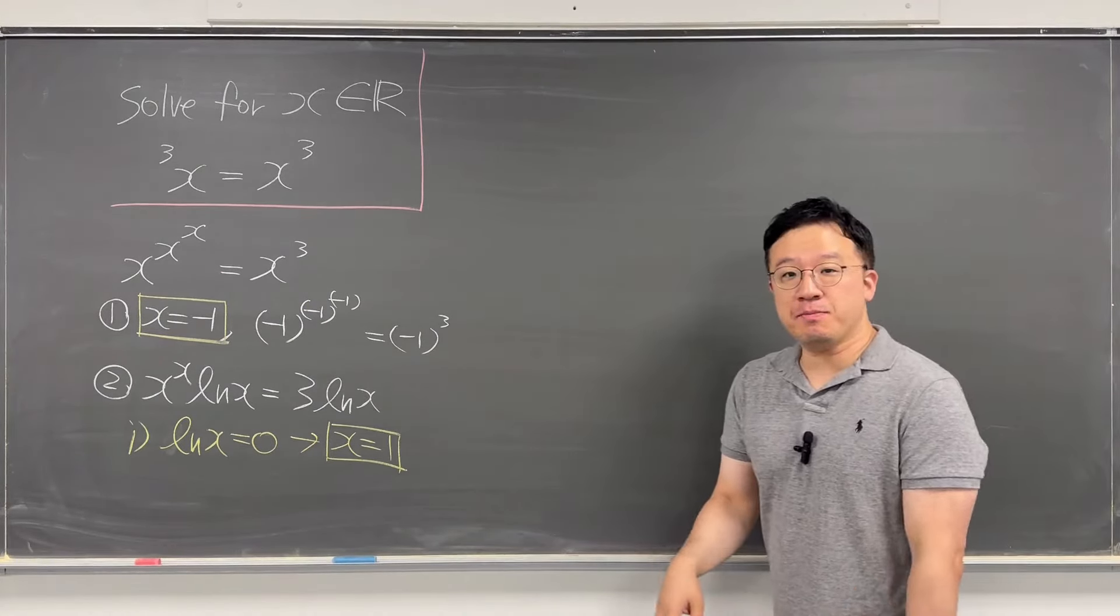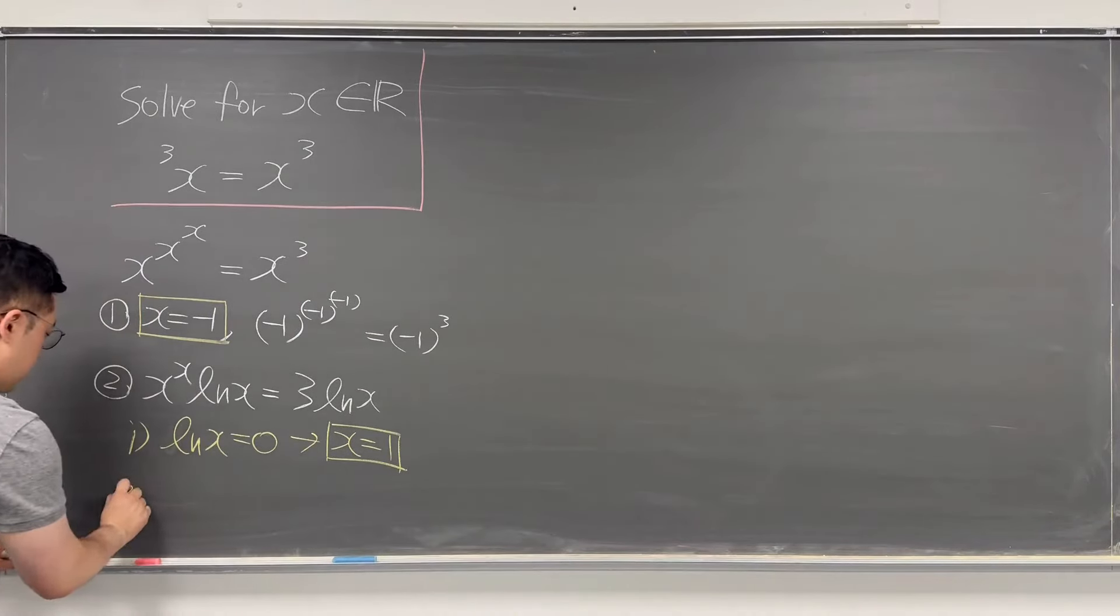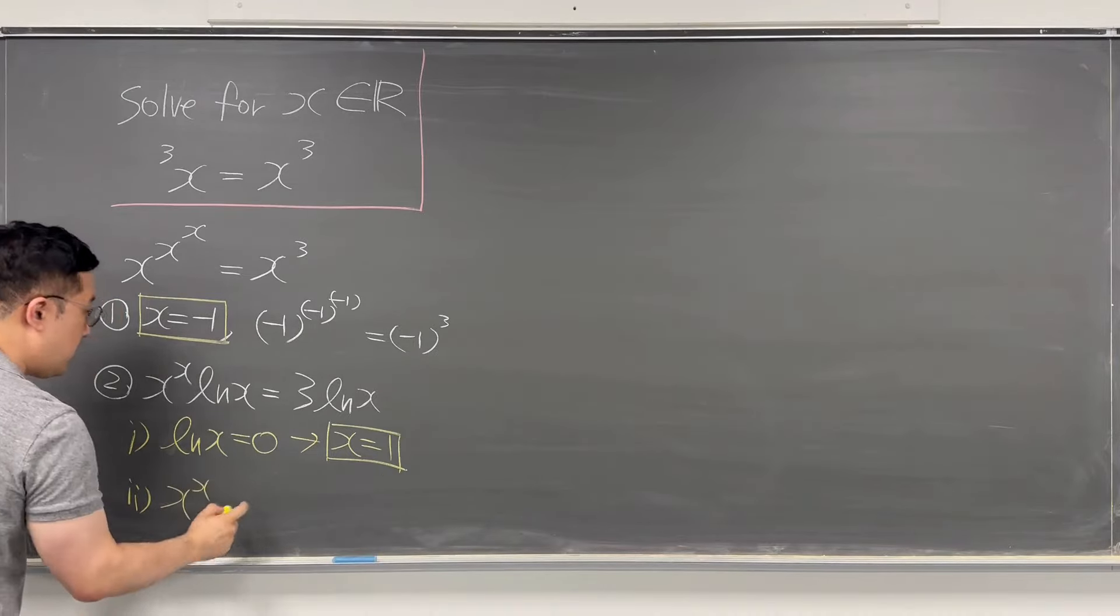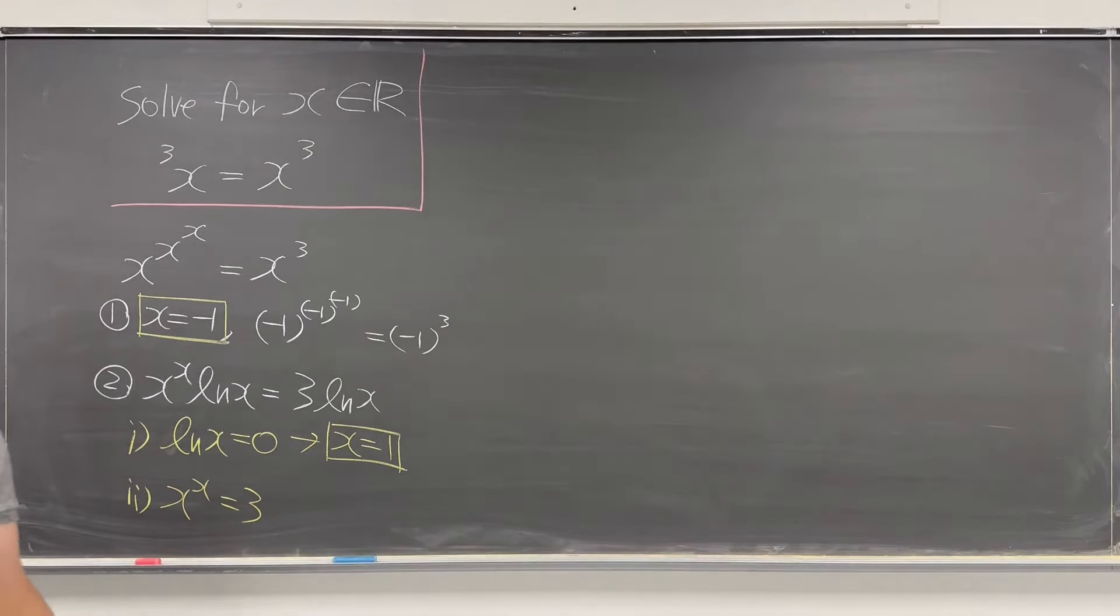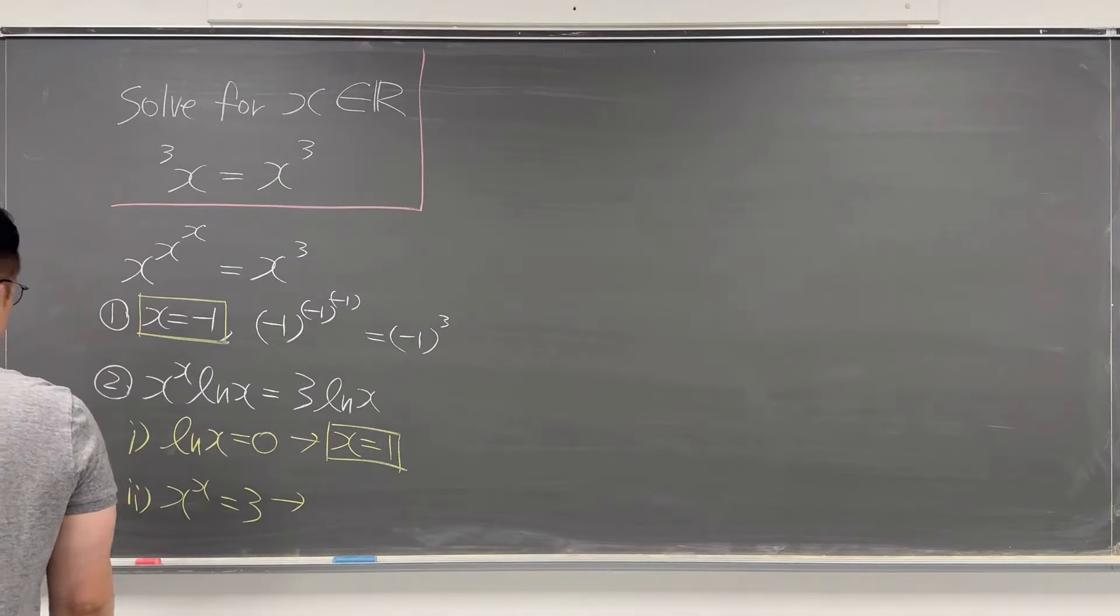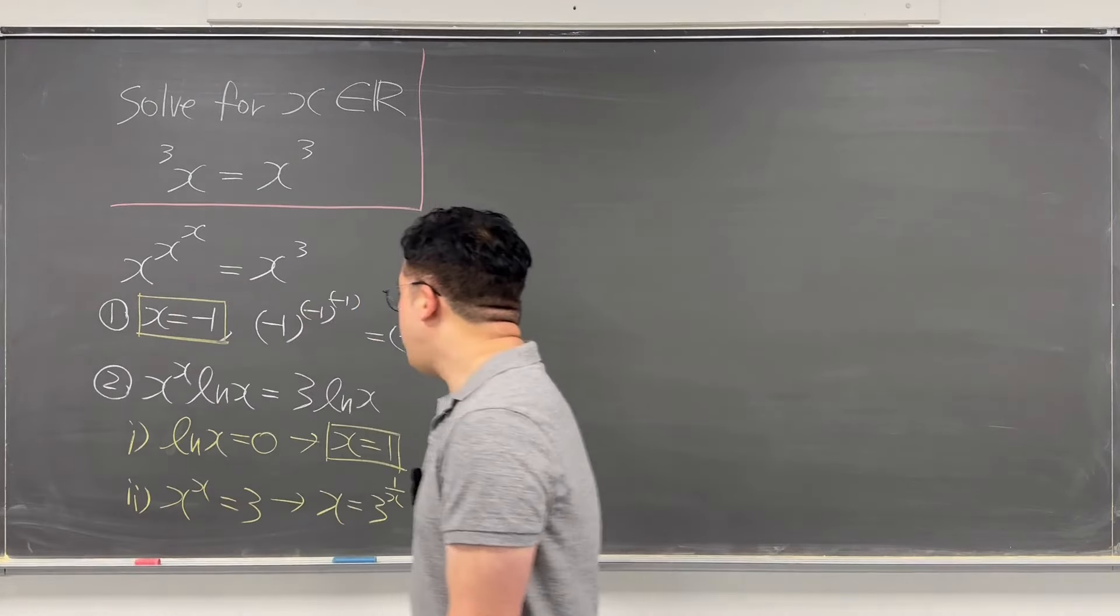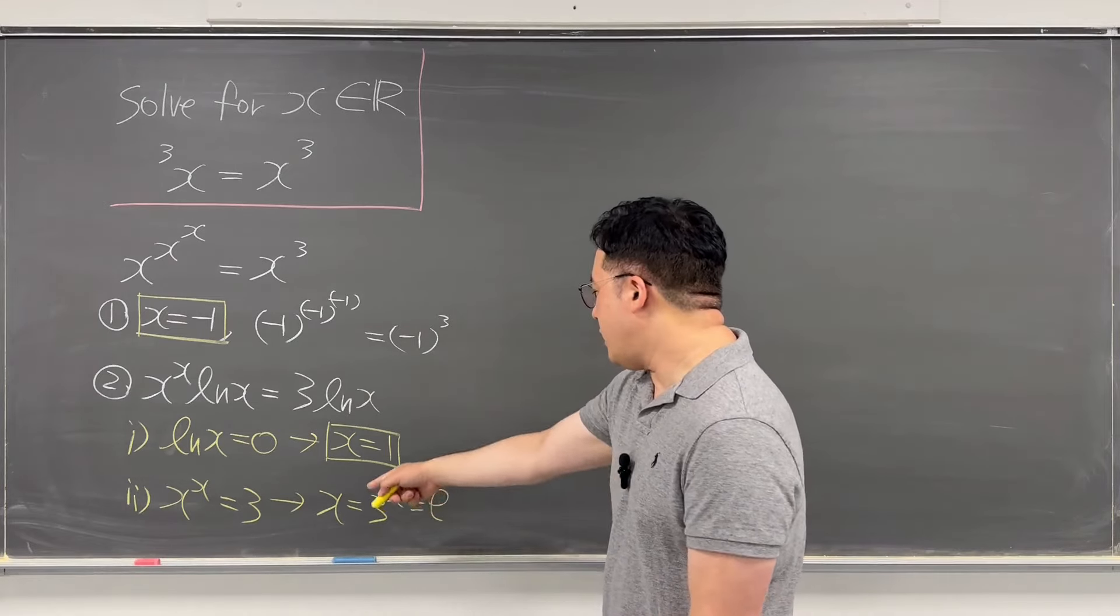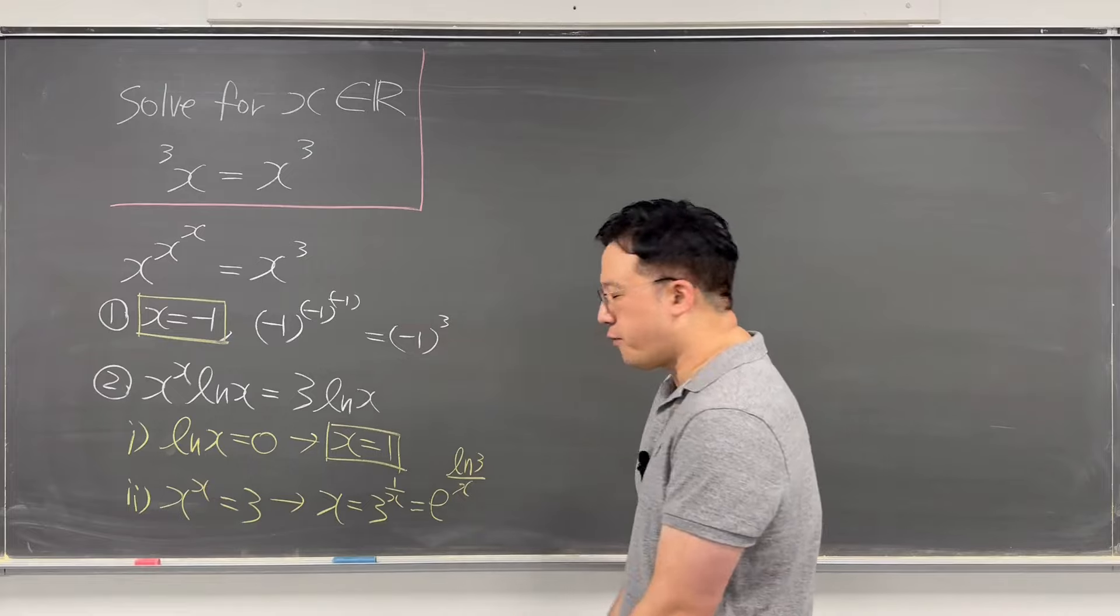Then the next solution, maybe we can use Lambert W function, right? So for the next solution, if x to the power of x is equal to 3. Okay, so that's why x is going to be equal to 3 to the power of 1 over x. And this is the same as e to the power of ln 3 over x.